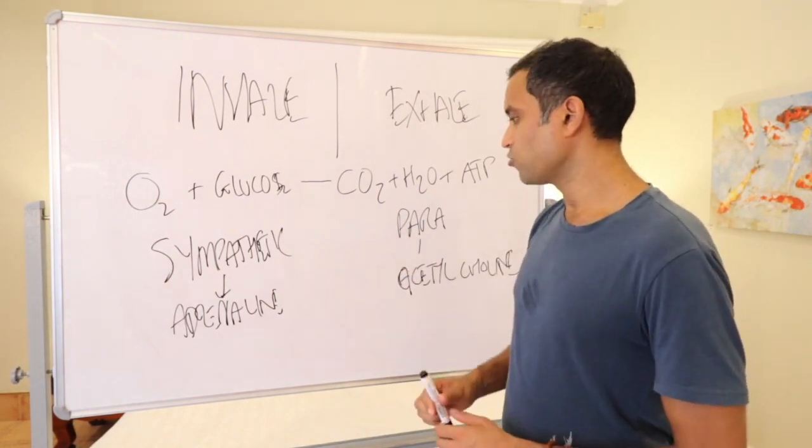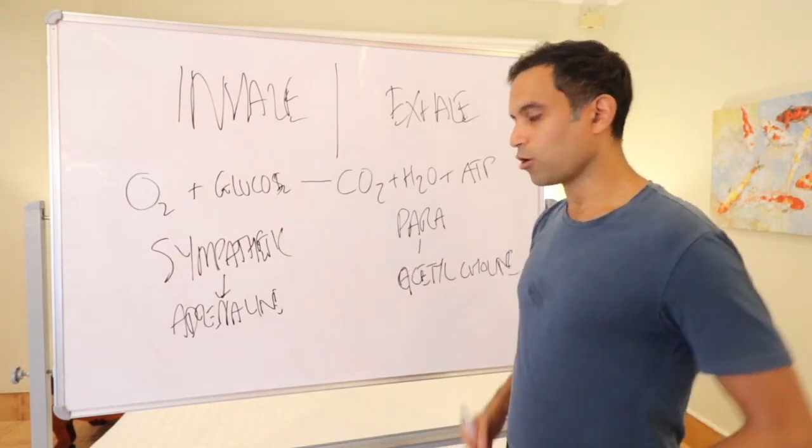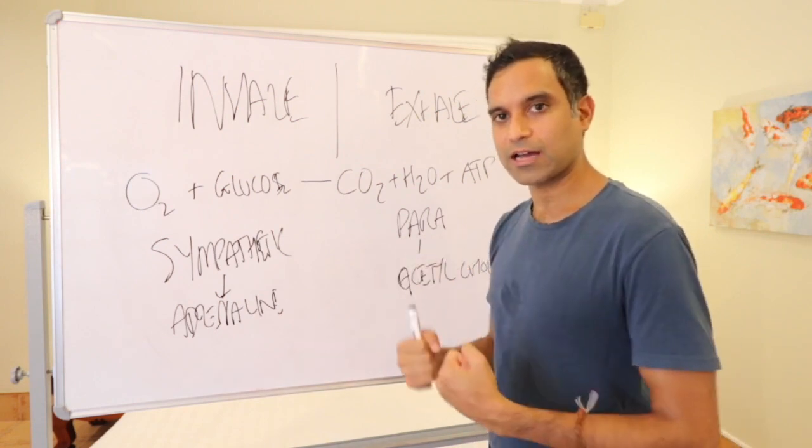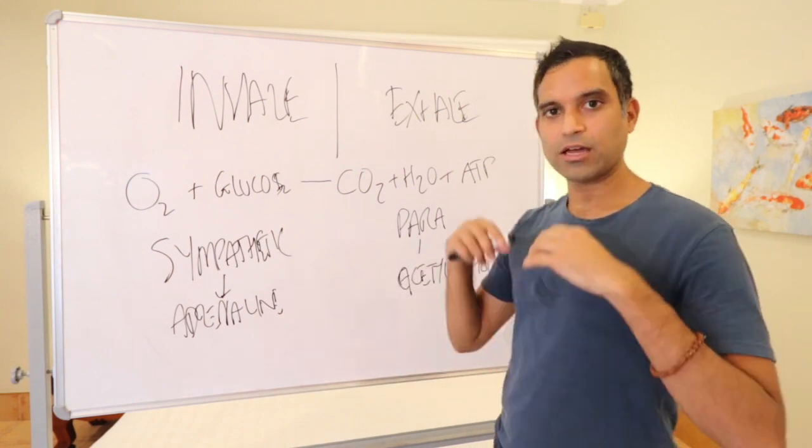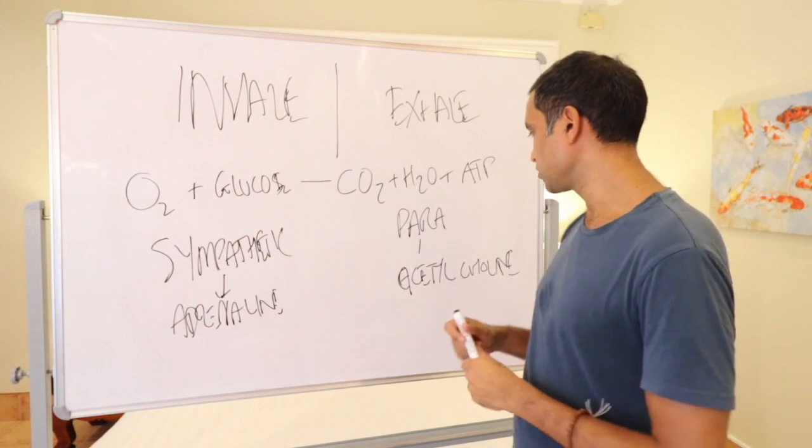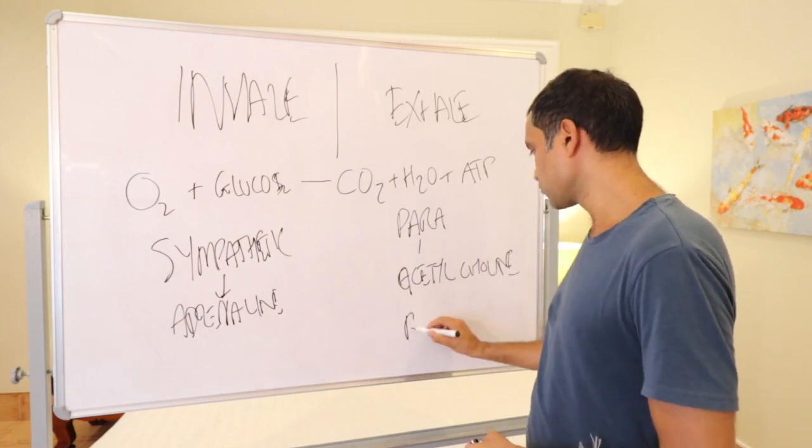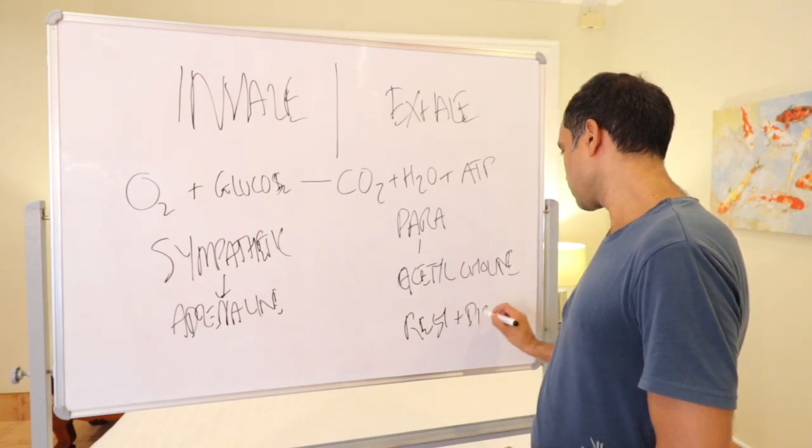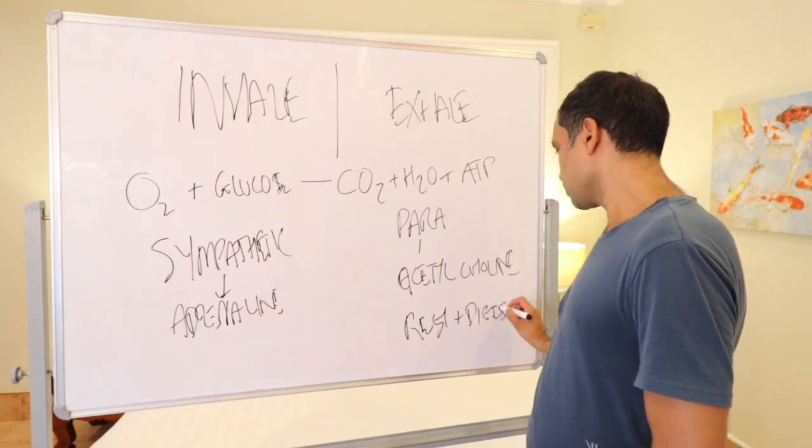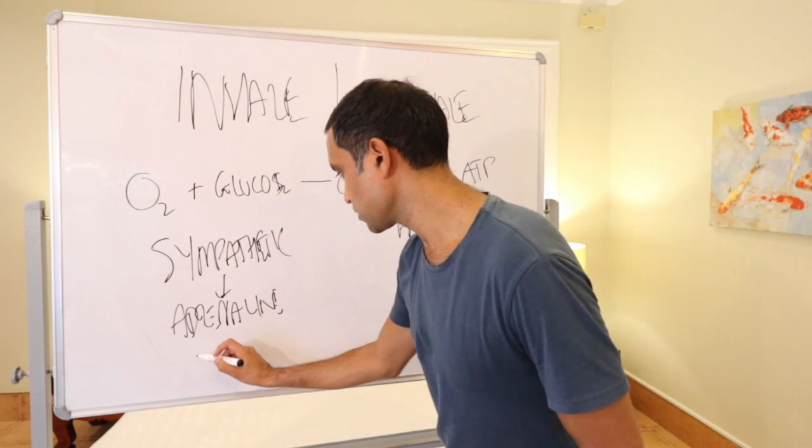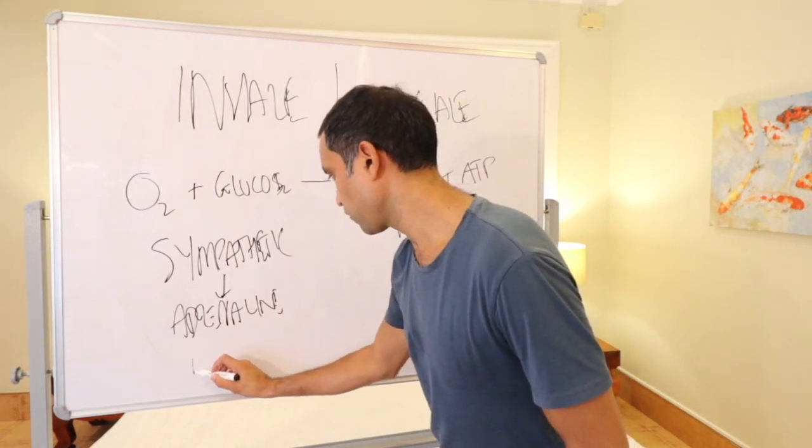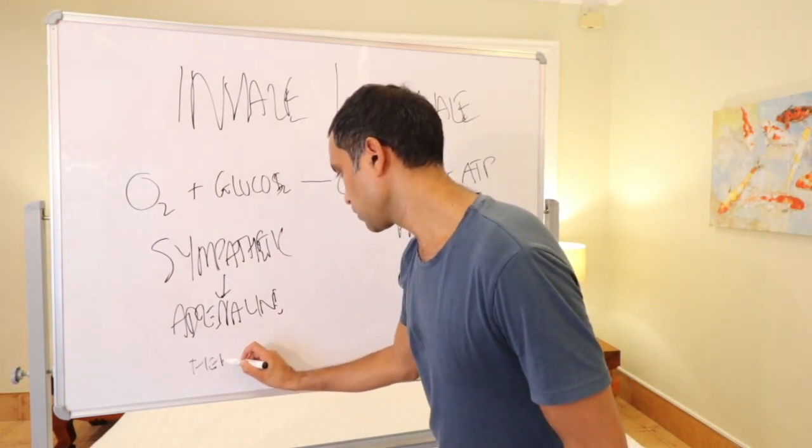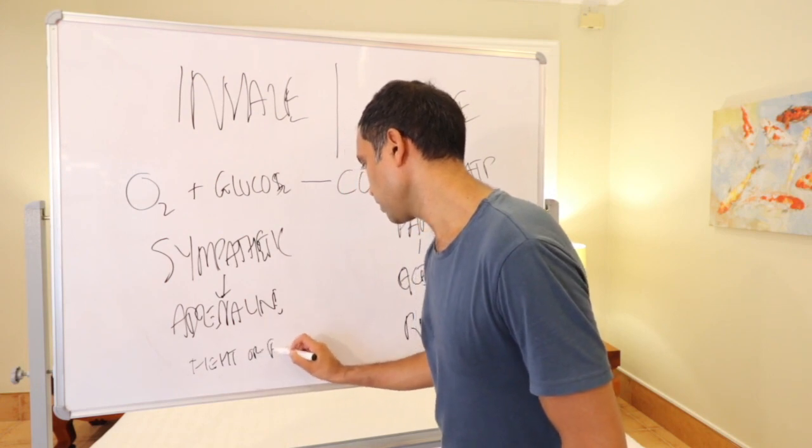Okay. So adrenaline is what makes us do stuff. It's like an action thing. Acetylcholine relaxes us. It's rest and digest. So this is known as rest and digest, and this is known as fight or flight.